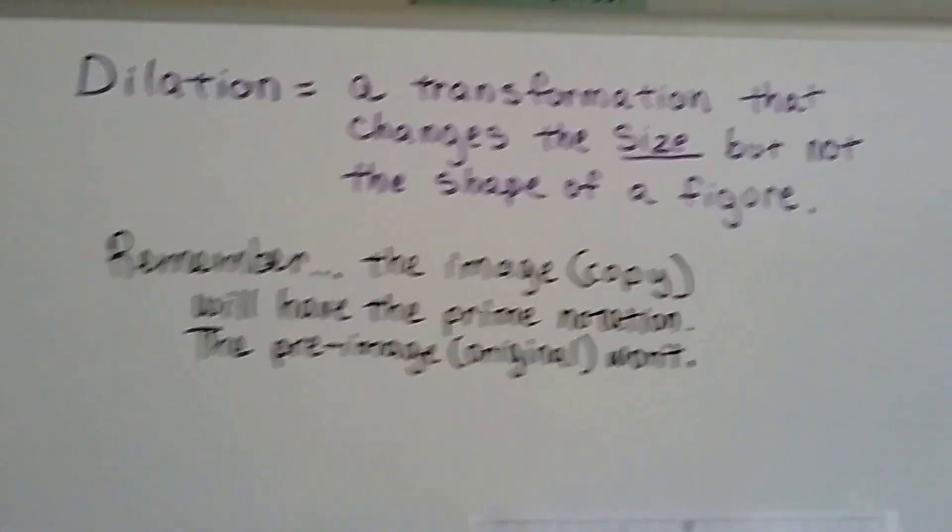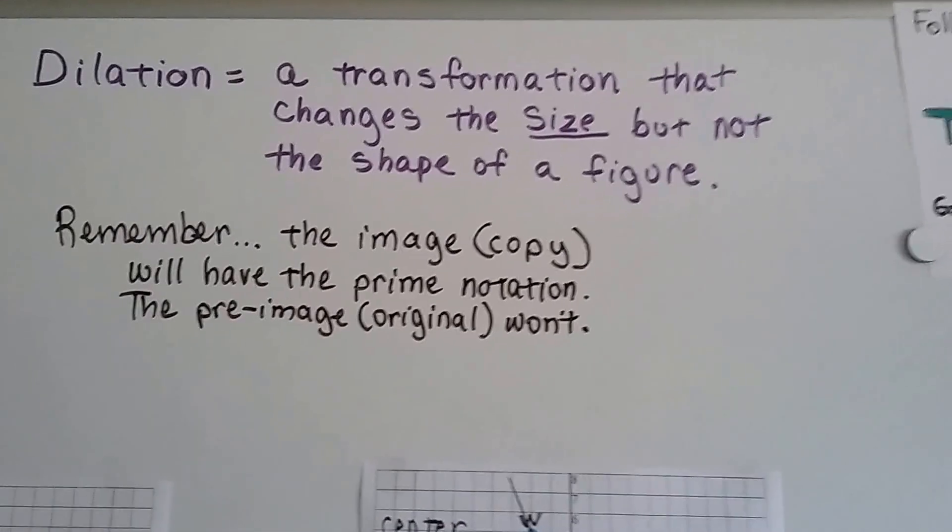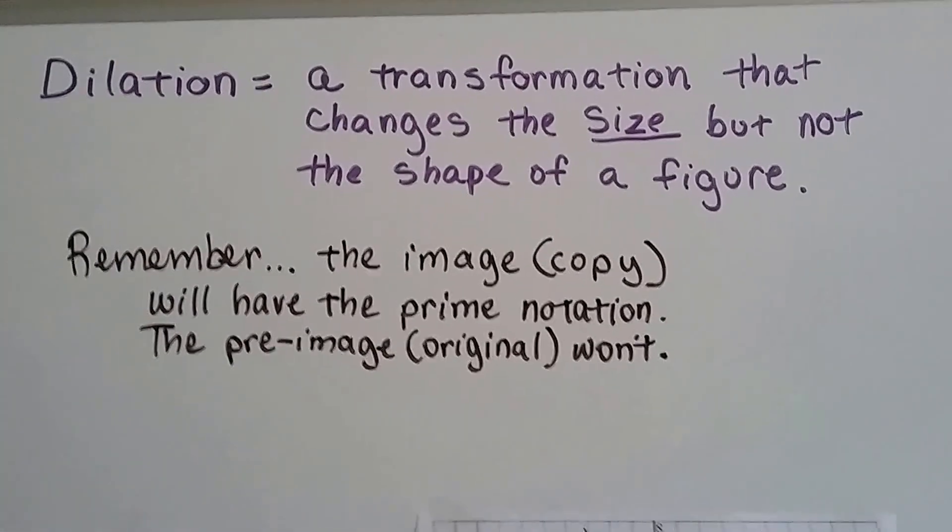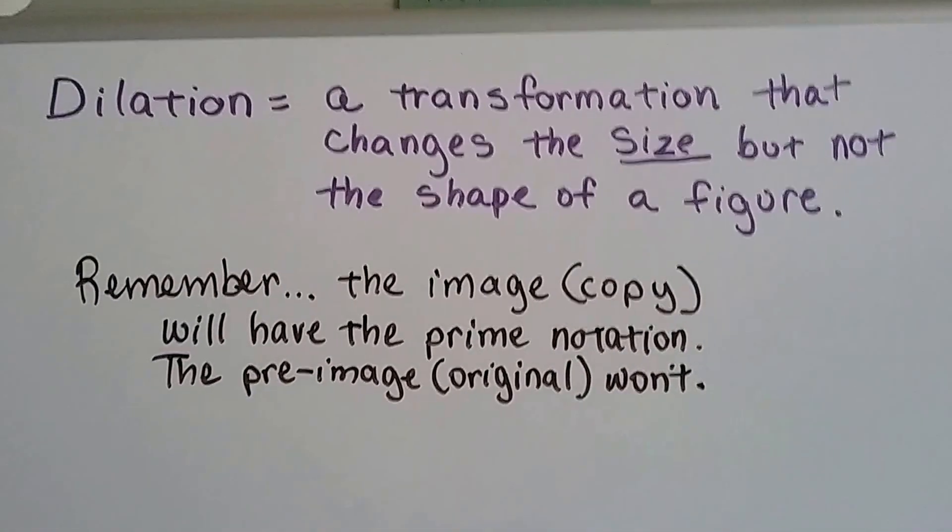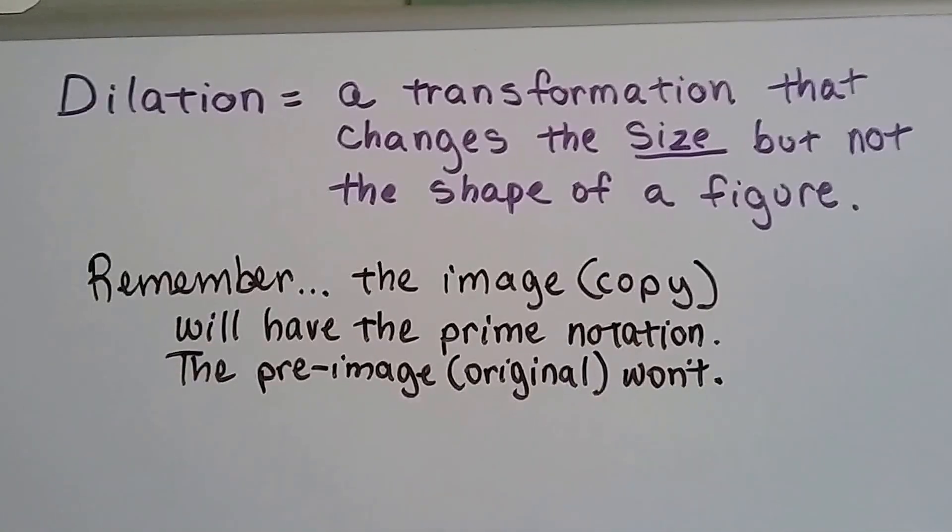A dilation is a transformation that changes size but not the shape of the figure. The image, the copy, is going to have that prime notation, those little tick marks. The pre-image won't.